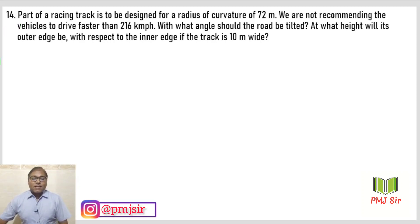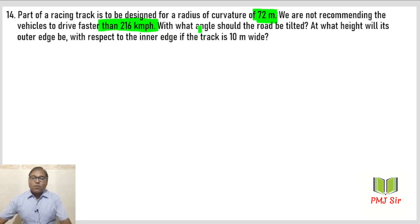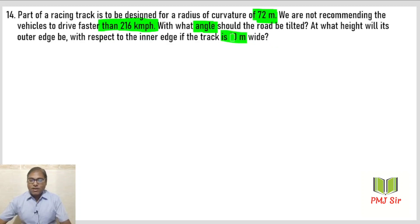Question 14: Part of a racing track is to be designed for a radius of curvature of 72 meters. The racing track ka radius given hai. We are not recommending the vehicle to drive faster than 216 kilometers per hour — yani ki yeh ek maximum speed limit hai. With what angle should the road be tilted, yani angle of banking ka question hai. At what height will the outer edge be with respect to the inner edge if the track is 10 meters wide — yeh 10 meter width diya hua hai aur height dhundni hai.